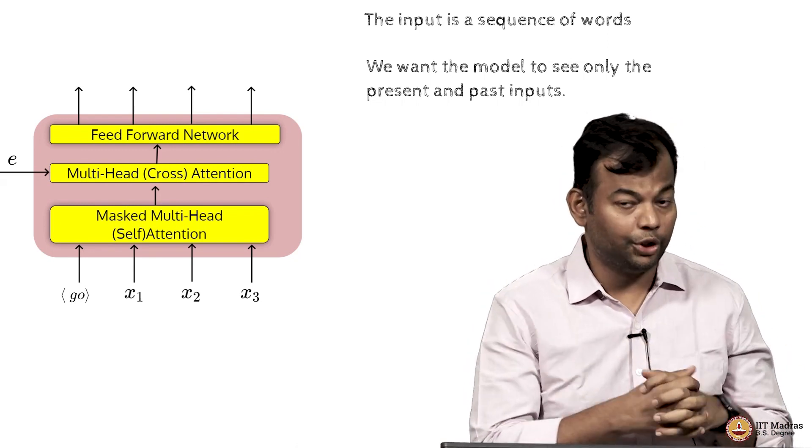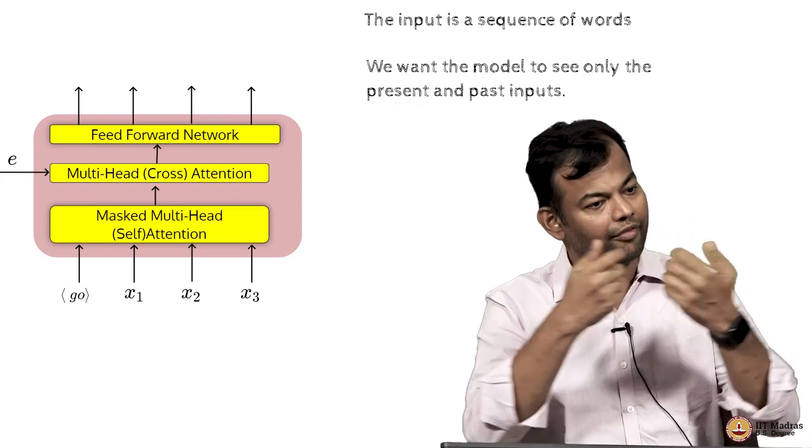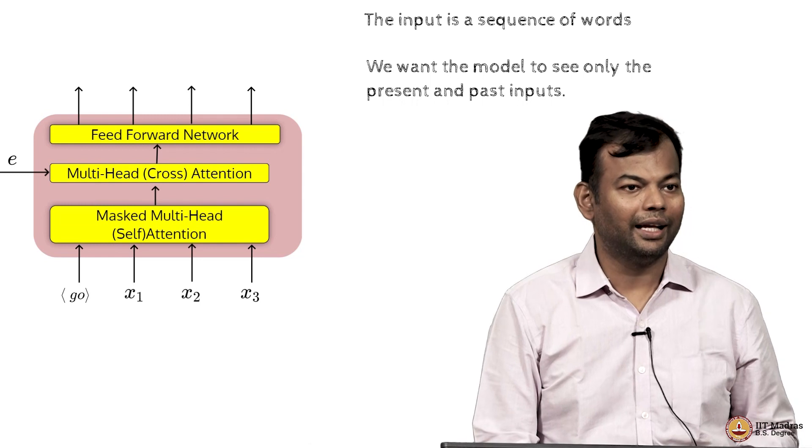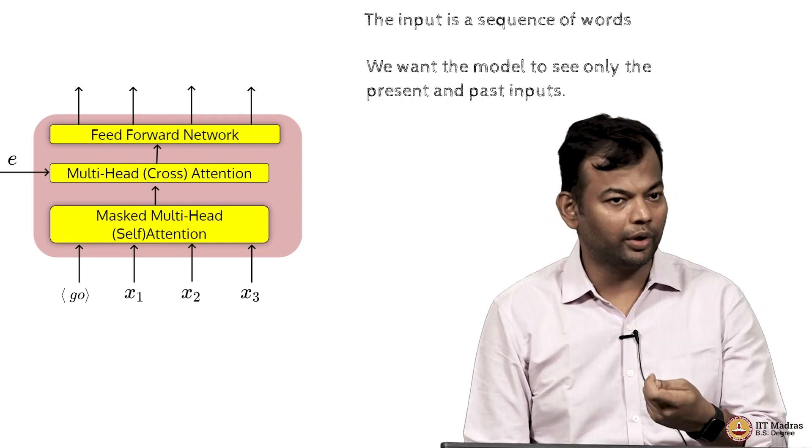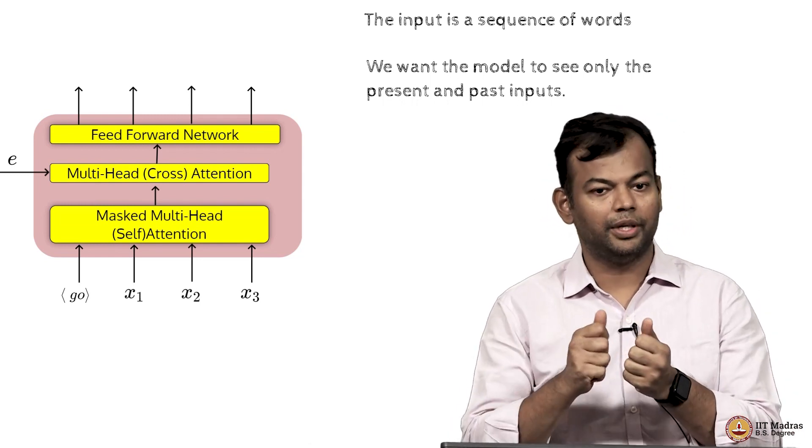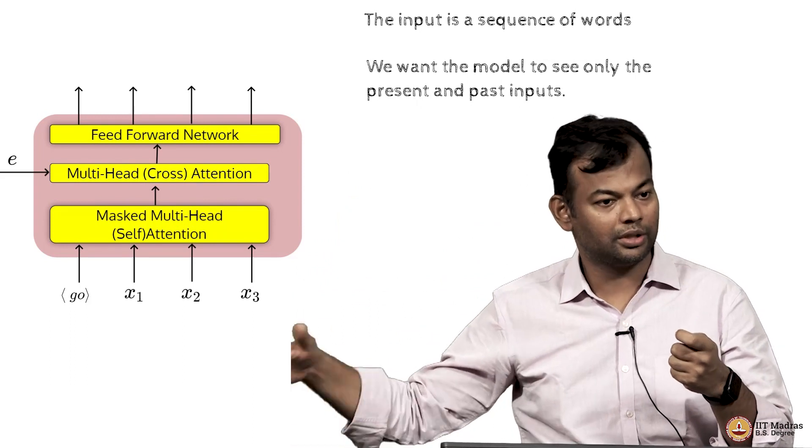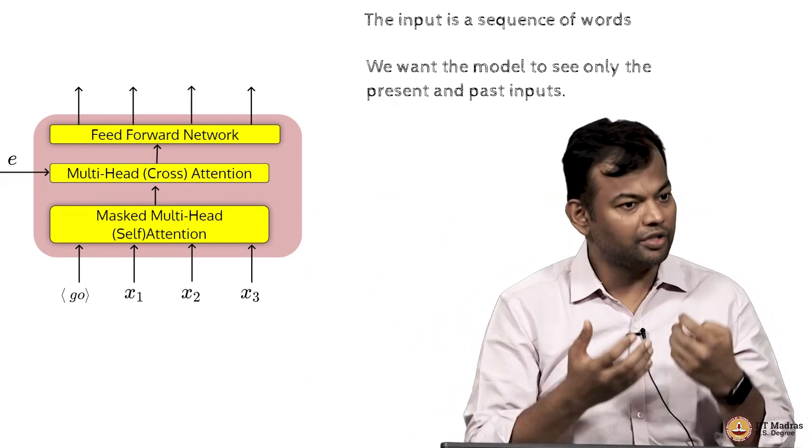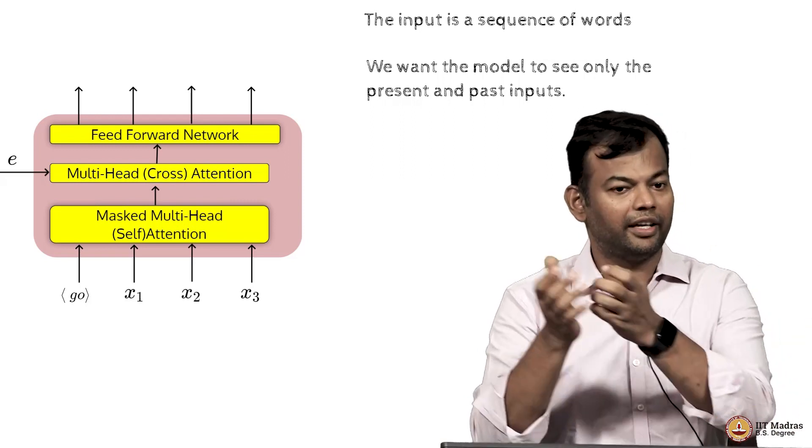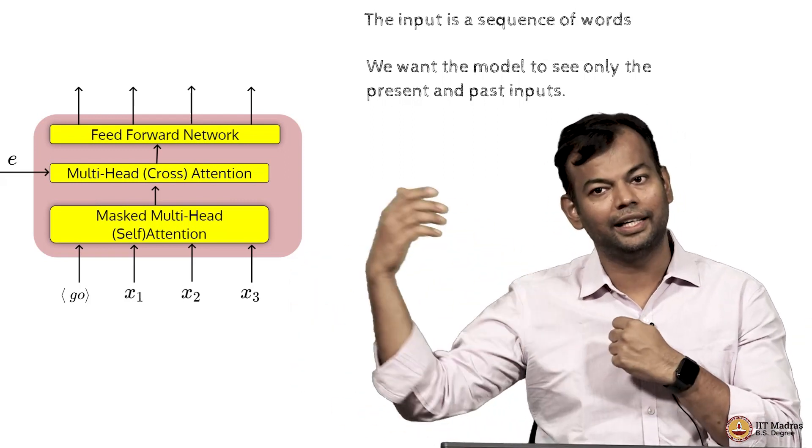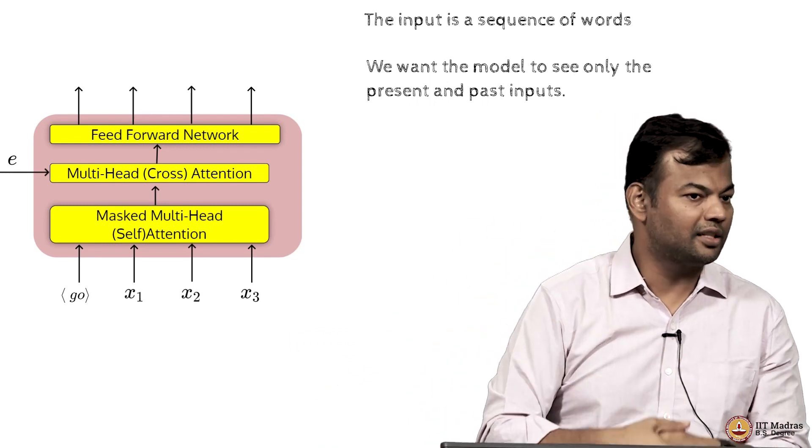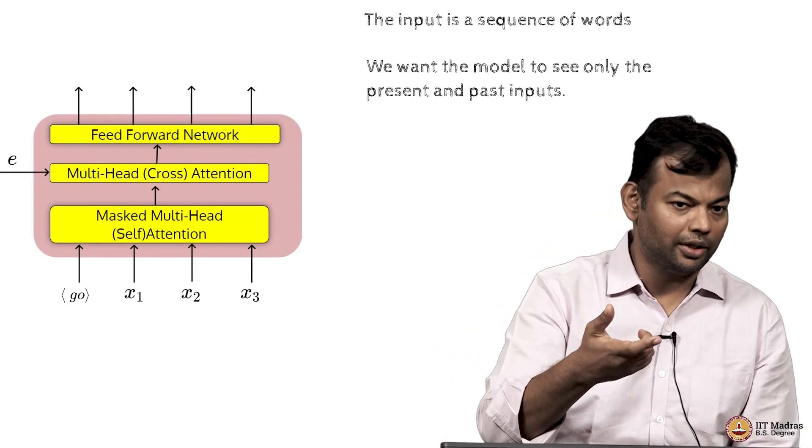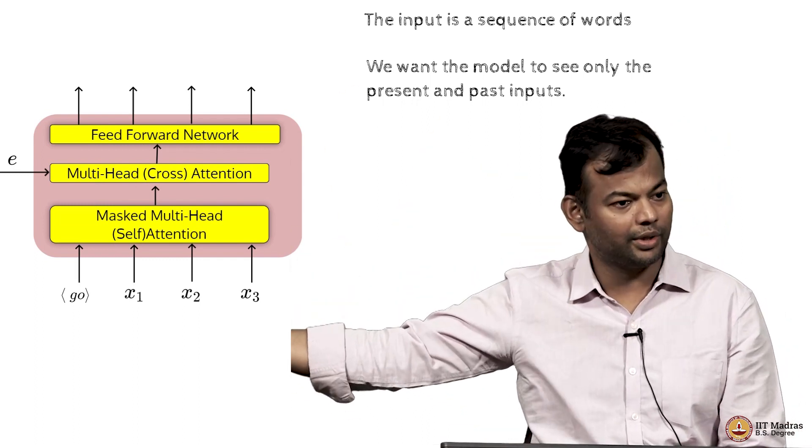So if I have given it the, during training I of course have everything with me, the entire document, entire paragraph with me. And now suppose I want to predict the 5th word, it does not make sense for me to tell it what comes after because what comes after is a task for the model to generate. It has to first predict the 5th word then take the 5 words and generate the 6th word. If I already tell it what comes after then this task of predicting the 5th word becomes easier and in the real world when the model is used it will not have access to that 6th, 7th, 8th, 9th word.